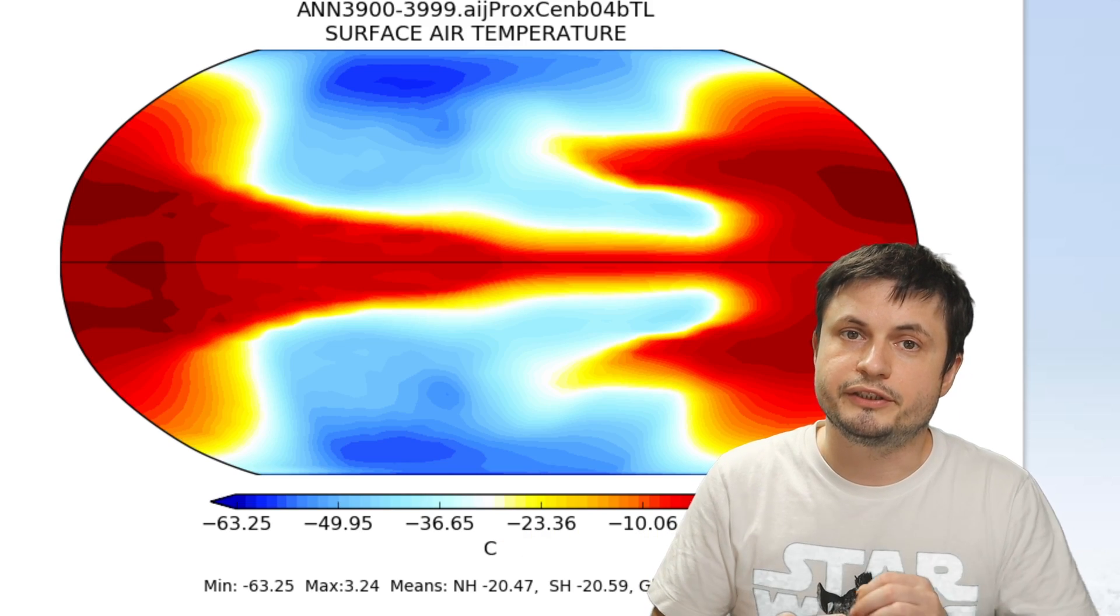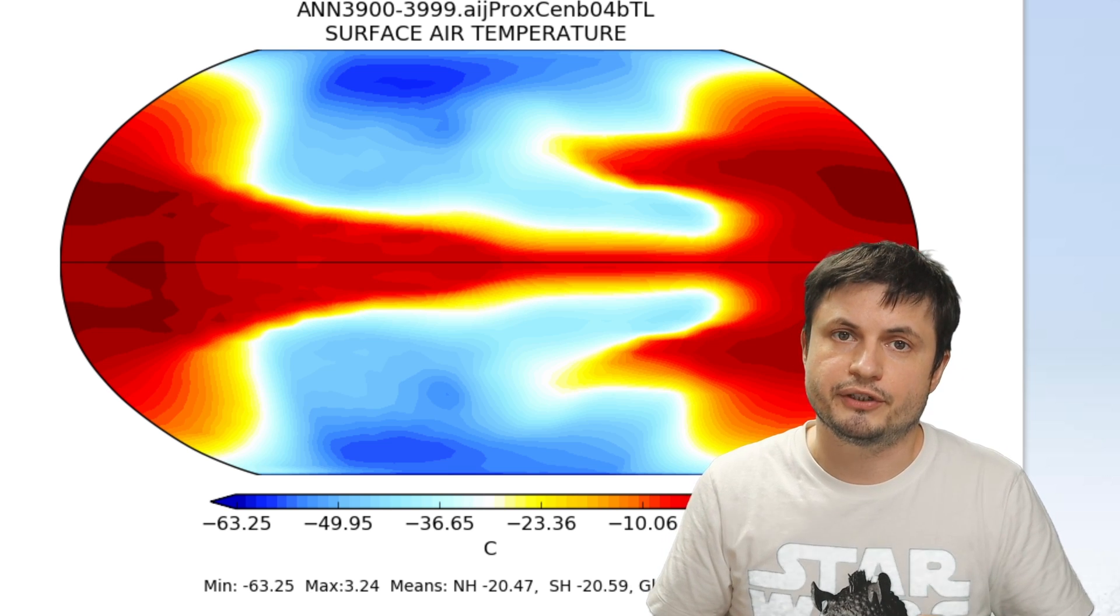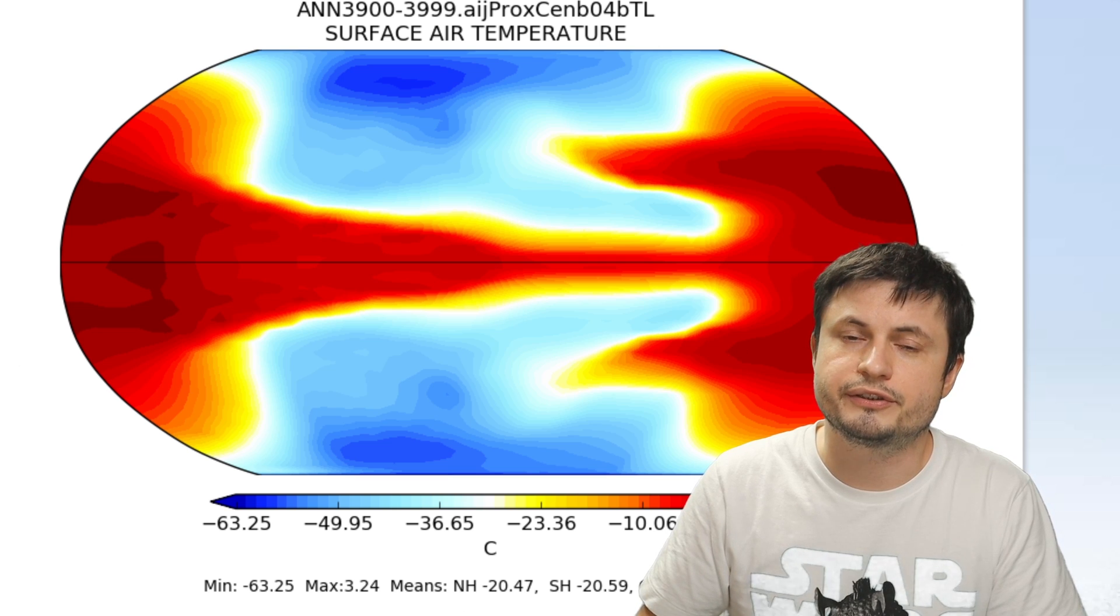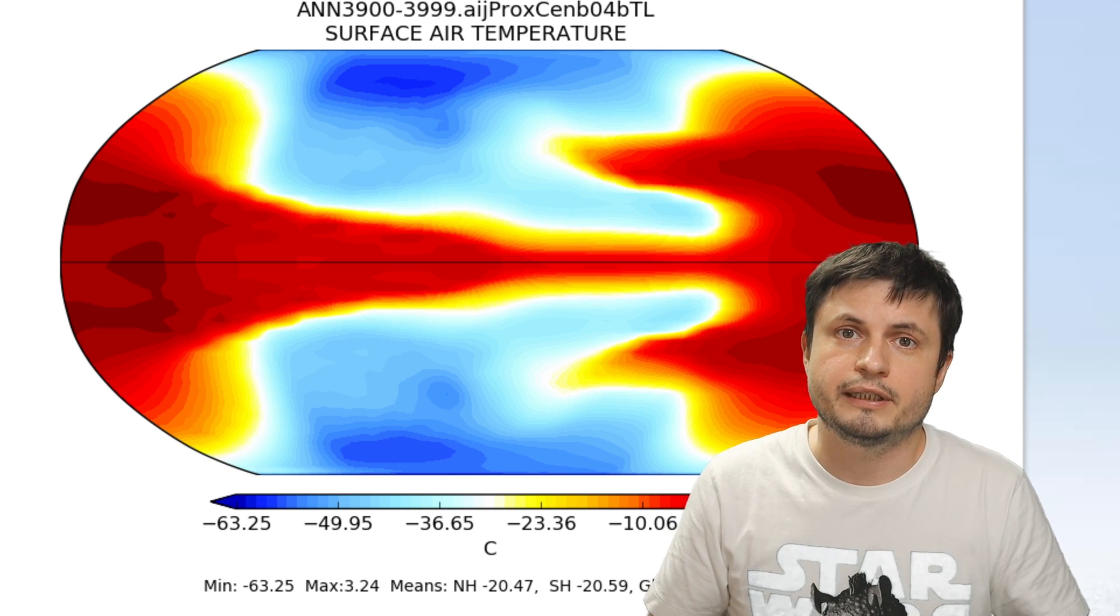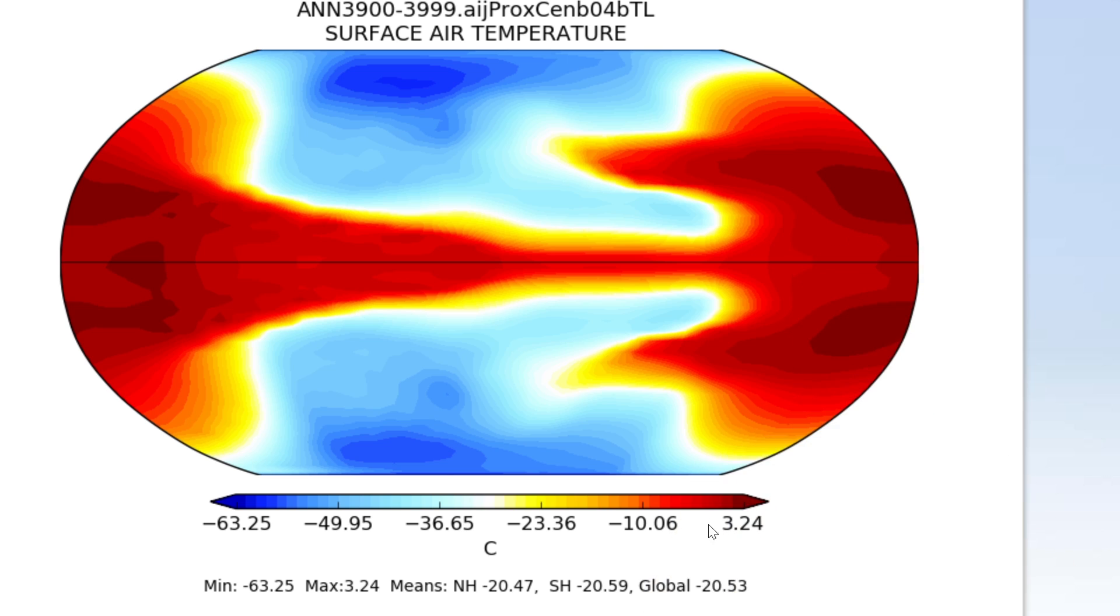Here's for example what the surface of nearby Proxima b might look like, assuming that it has earth-like atmosphere. And notice how here the heat is unequally distributed and that's because the planet here is actually tidally locked to its star with one side always facing the hot side with the hottest temperature being about three degrees celsius and the colder side on the dark side of the planet being about minus 63 degrees celsius.